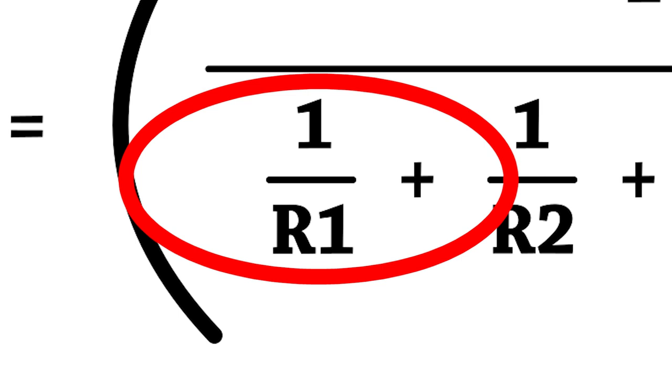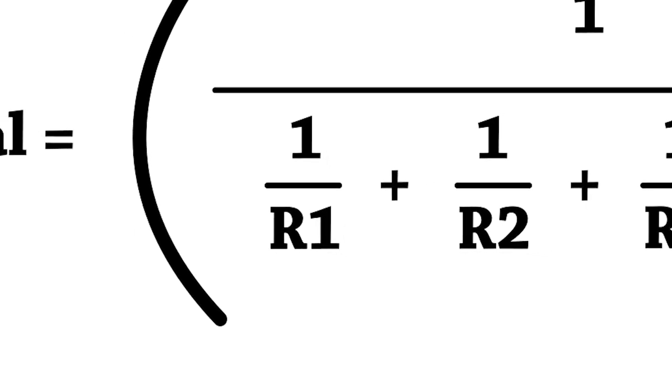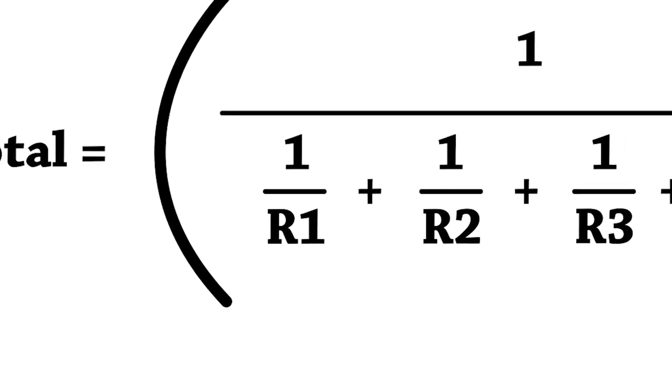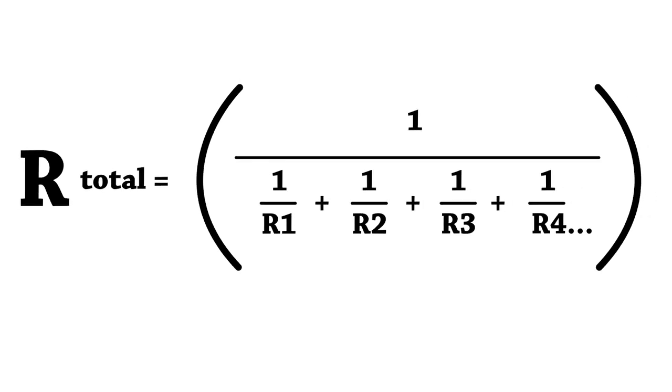The first thing we do in this equation is we take the reciprocal of each resistor value. And when we say take the reciprocal, that means you divide 1 by the resistor value. Doing this converts resistance into conductance, which is the exact opposite idea. A high conductance is a low resistance, and a low conductance is a high resistance. Since our resistors are all in parallel now, they're each conducting current separately and independently.